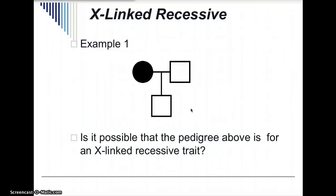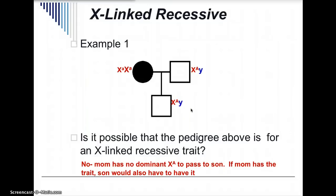Is it possible that the pedigree above is for an X-linked recessive trait? Women have two X chromosomes and men only have one. The woman here has two recessive alleles on her X chromosomes. The man has one dominant allele on his X chromosome, and his Y chromosome has no allele. The son would have to have a dominant allele on his X chromosome; however, we know the X chromosome in the son could only have come from the mother. So it's not possible — the mother has no dominant allele to pass to the son. If the mom has the trait, the son has to have the trait.